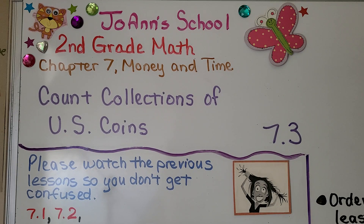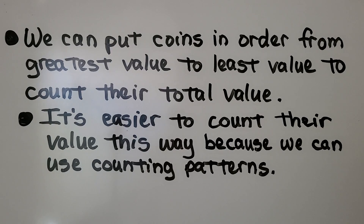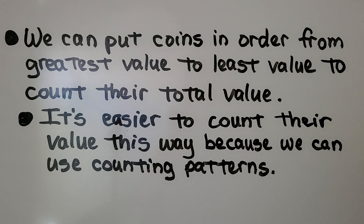Lesson 7.3: Count Collections of U.S. Coins. We can put coins in order from greatest value to least value to count their total value. It's easier to count their value this way because we can use counting patterns, like counting by tens or by fives.